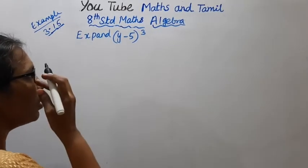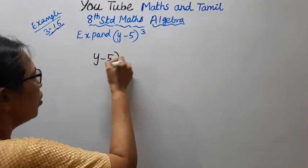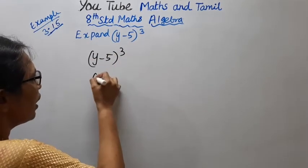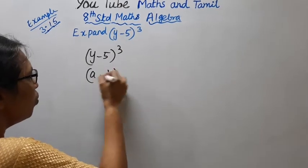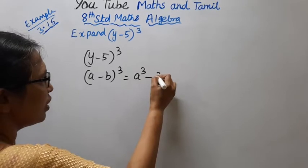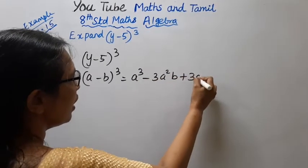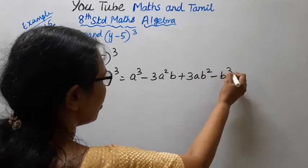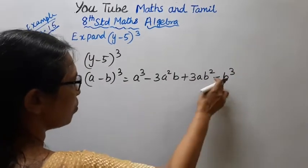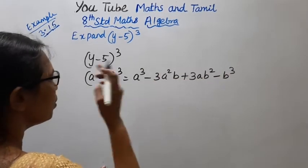Y minus 5 the whole cube. Y minus 5 the whole cube. A minus B the whole cube. A cube minus 3 A square B plus 3 A B square minus B cube. The identity is: plus minus, plus minus, 3 A square B, 3 A B square, minus B cube.